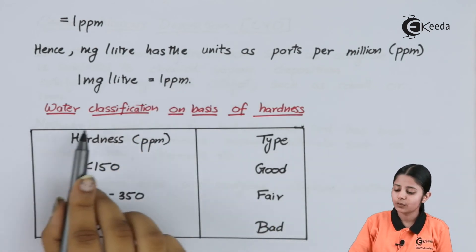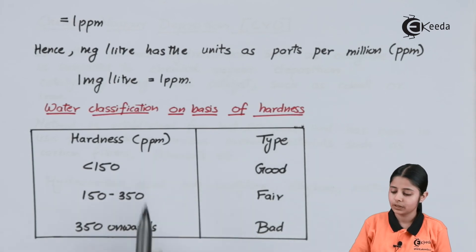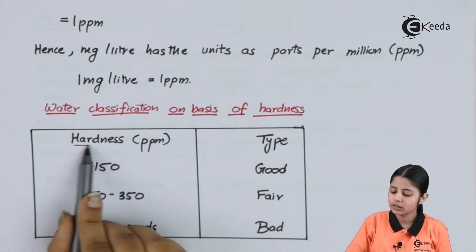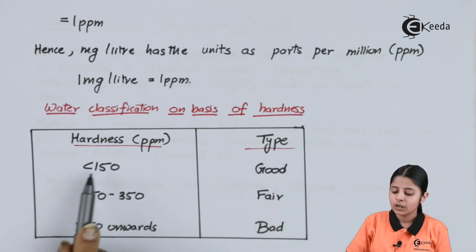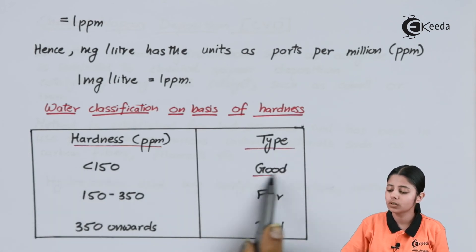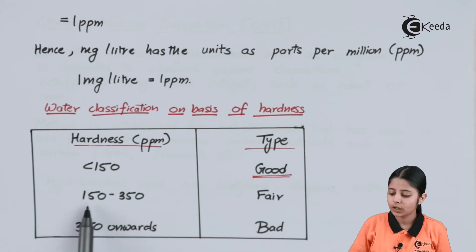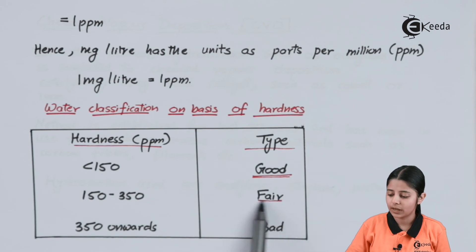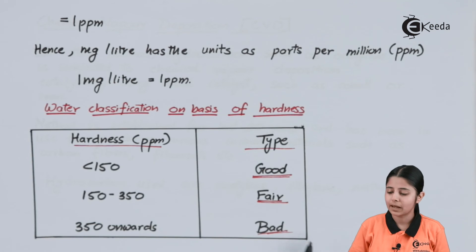Let us see the classification of water based on hardness. Hardness is measured in PPM. If it is less than 150 PPM, the water is good — as good as soft water. If it is 150 to 350 PPM, it is fair. But if it is 350 PPM or above, the quality is bad.